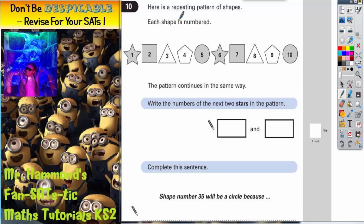Question 10: Here is a repeating pattern of shapes. Each shape is numbered, so we've got 1, 2, 3, 4, 5, 6, 7, 8, 9, 10, and it goes star, square, triangle, pentagon, circle, star, square, triangle, pentagon, circle.